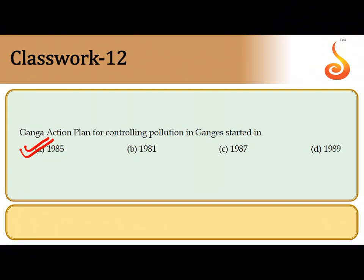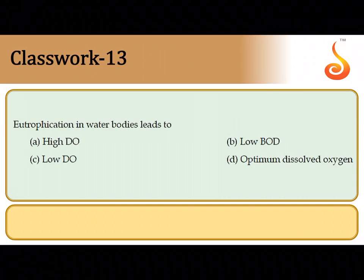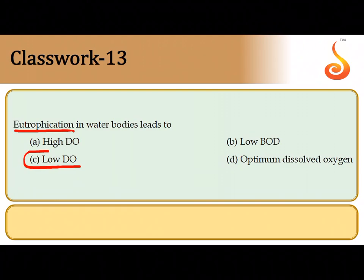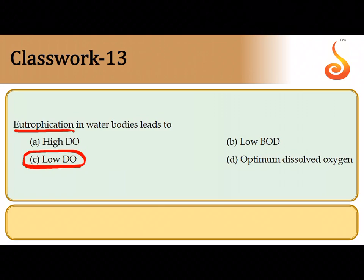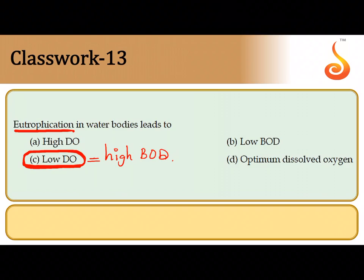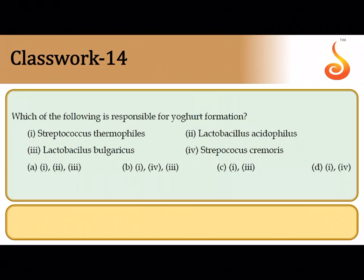The thirteenth question covers eutrophication, which means nutrient enrichment of water. The water gets enriched with nitrates and phosphates, leading to a burgeoning growth of algae and plants. These plants compete with each other for dissolved oxygen, resulting in low dissolved oxygen. Another way to express this is a very high biochemical oxygen demand, so the correct answer is option C.